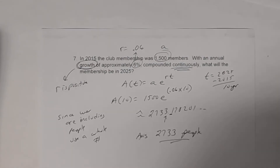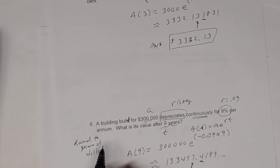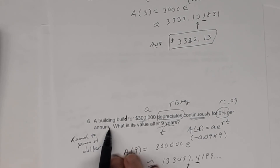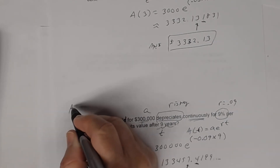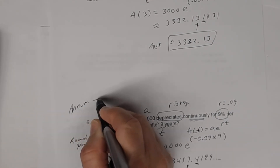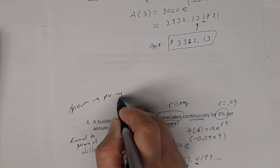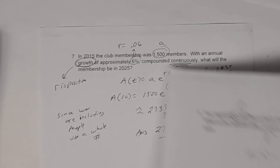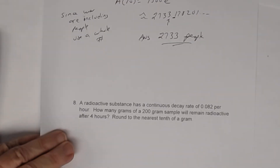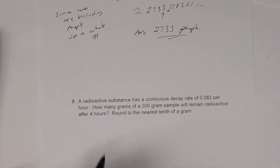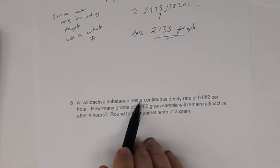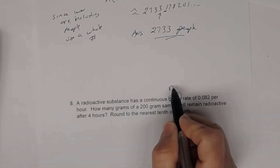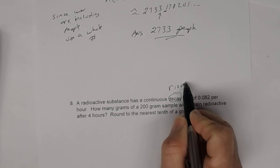One thing to mention: the word 'per annum' — when you see 'per annum' it just means per year. That's all it means. Also for the last problem: a radioactive substance has a continuous decay, so remember r is negative.